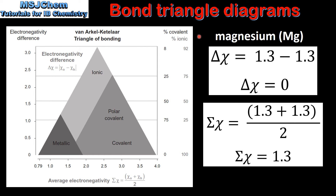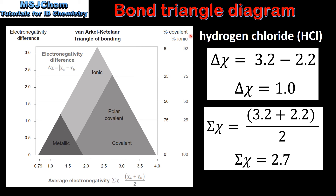In our next example we will determine the type of bonding in magnesium. The difference in electronegativity is zero and the average electronegativity is 1.3. So that's 0 on the y-axis and 1.3 on the x-axis, which tells us the type of bonding is metallic. In our last example we will determine the type of bonding in hydrogen chloride. The difference in electronegativity is 1.0 and the average electronegativity is 2.7. So that's 1.0 on the y-axis and 2.7 on the x-axis, which tells us the type of bonding is polar covalent.